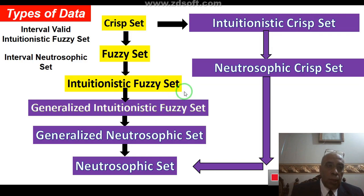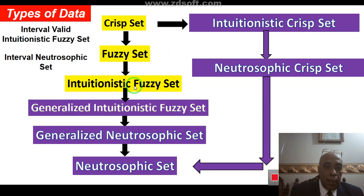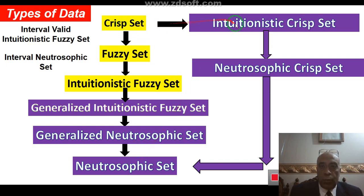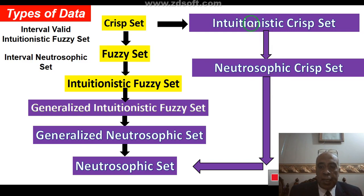The types of neutrosophic data include neutrosophic set, neutrosophic fuzzy logic, generalized neutrosophic pseudo-set, and the neutrosophic set. From crisp set to intuitionistic crisp set, to intuitionistic neutrosophic crisp set as a generalization of intuitionistic crisp set, to neutrosophic crisp set — which is a generalization of all types of sets.